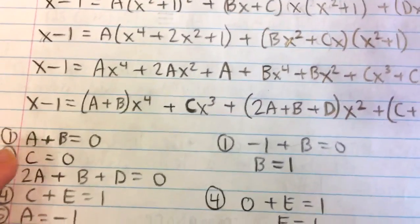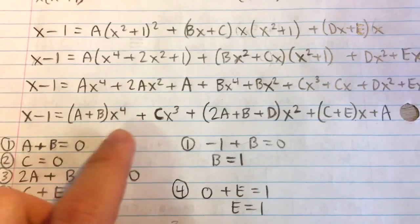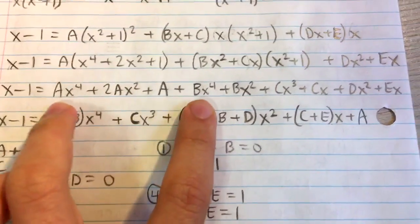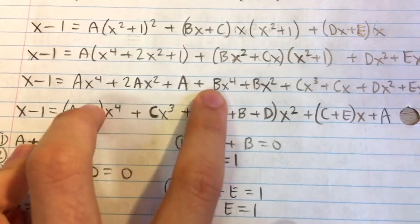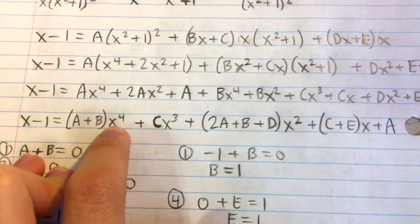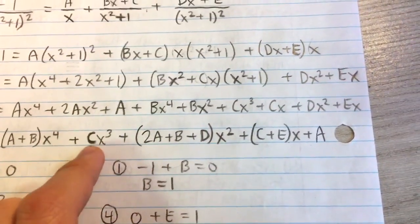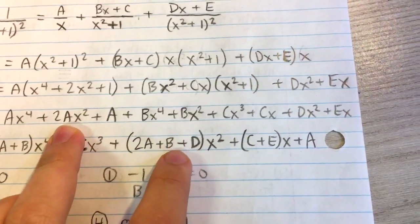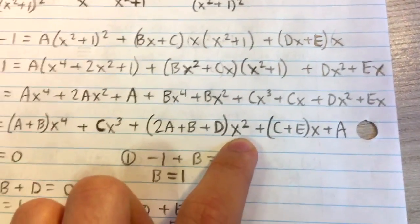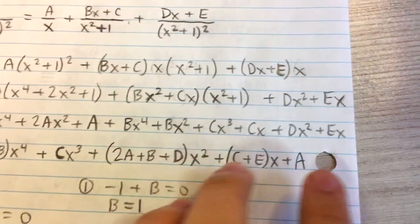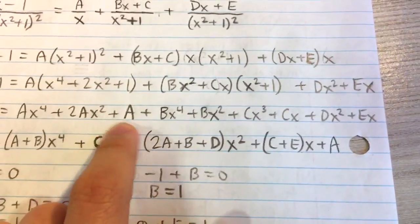Now we're going to equate coefficients by collecting all terms of each power. For the fourth power, we have Ax to the fourth and Bx to the fourth, giving (A plus B)x to the fourth. There's only one cubic term: Cx cubed. For the squared term, we have 2Ax squared plus Bx squared plus Dx squared. For the linear term, we have Cx plus Ex, giving (C plus E)x. And the constant is just A.